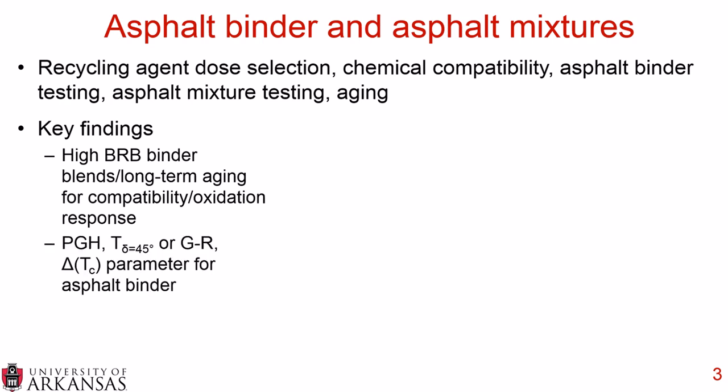From an asphalt binder perspective, you want to look at the high temperature performance grade for high temperature properties, or PGH. For intermediate temperature, you can look at either T delta 45 or the Glover Rho parameter, and for low temperatures they recommend using the delta TC parameter. The report provides suggested performance thresholds for these three parameters.